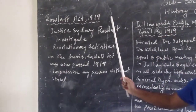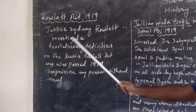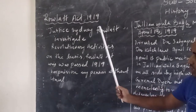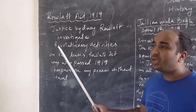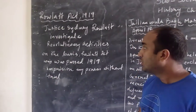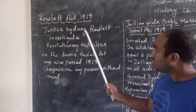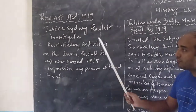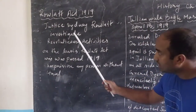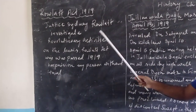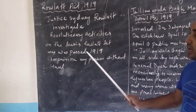So what is this Rowlatt Act? Justice Sidney Rowlatt was tasked with investigating revolutionary activities — that means at that time there were revolutionary activities here and there in India, where people were going against the British. So in order to investigate where the revolutionary activities were going on in India, Justice Sidney Rowlatt was given that responsibility. On the basis of these revolutionary activities, he passed the Rowlatt Act in 1919.